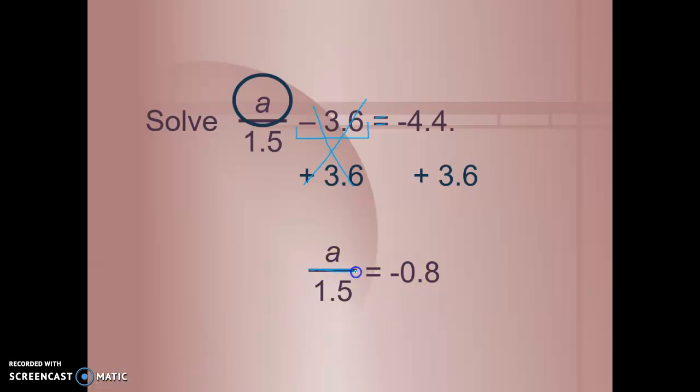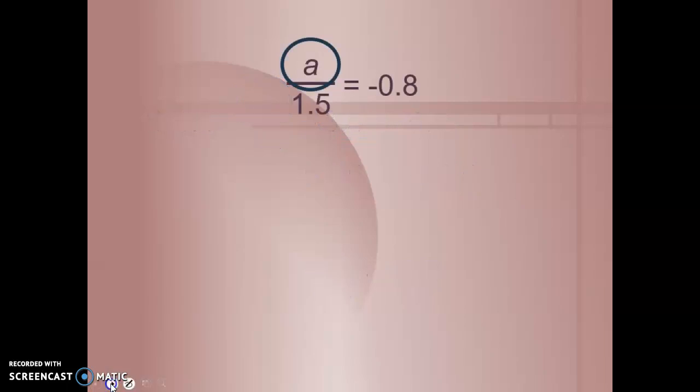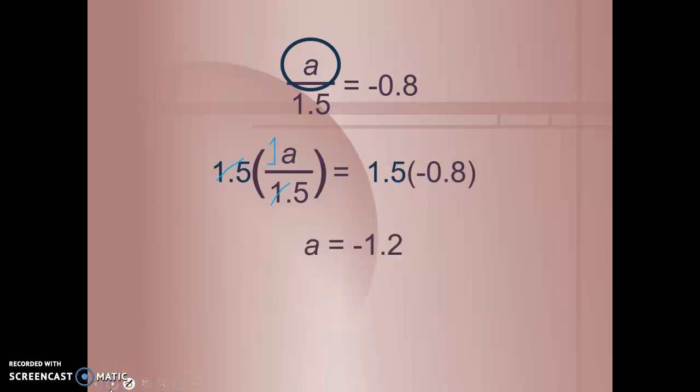Well, I need to get that a by itself. I need to undo this divided by. And the inverse operation of divided by is multiplied by. So I'm going to multiply both sides by 1.5. 1.5 and this 1.5 will cancel each other out. They'll become 1. So I have 1a. And 1.5 times negative 0.8 gives me negative 1.2.